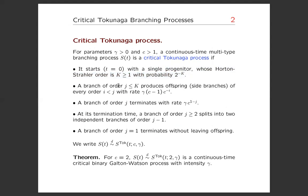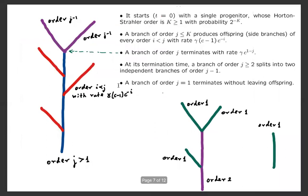So it is of order k with probability 2^(-k), and from there it starts branching according to the following rules. A branch of order j produces offsprings, that is side branches, of every order i < j with rate gamma(c-1)c^(-i) for order i, as drawn here, the side branches.